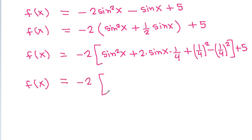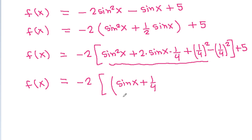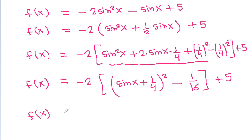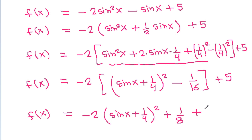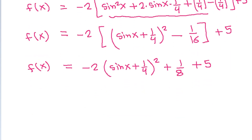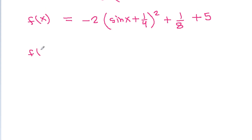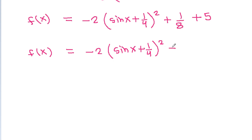Completing the square gives f(x) = -2(sinx + 1/4)² - 2·(-1/16) + 5, which becomes f(x) = -2(sinx + 1/4)² + 1/8 + 5 = -2(sinx + 1/4)² + 41/8.